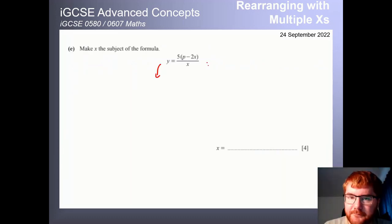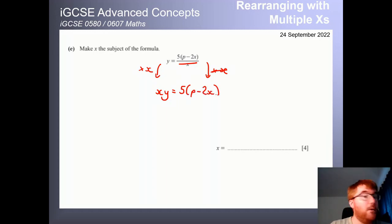So let's go and do that. So the way we'll start here, again, you can do the expansion of brackets first if you so wish. We're going to multiply by x on both sides. I generally don't like fractions. So let's get rid of that. So we get on the left-hand side xy. x times y is xy. And remember, this cancels here, leaving us with 5 brackets p minus 2x. Now we're going to expand our brackets. We could have done this at the start as well. So we get xy is equal to 5p minus 10x.